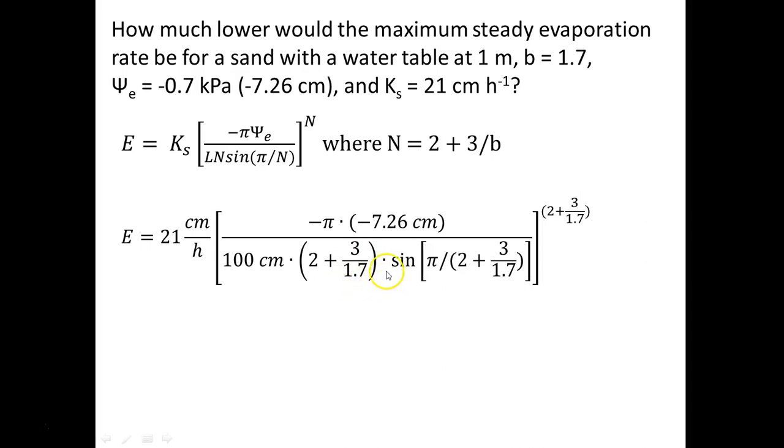And then further multiplied by sine. And the argument for the sine function is pi divided by N, which again, N is equal to 2 plus 3 over 1.7.